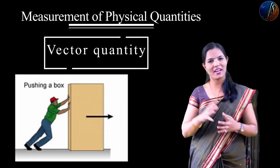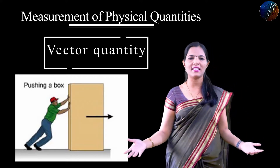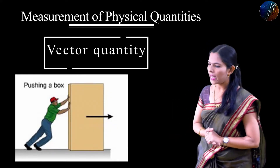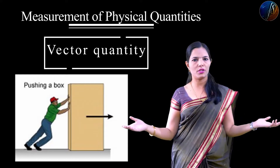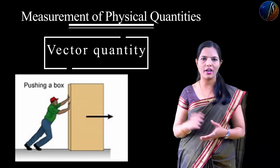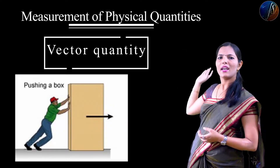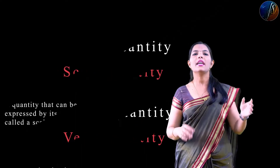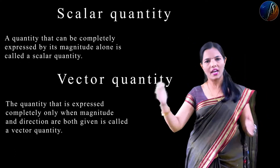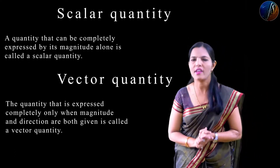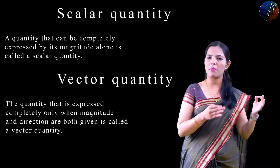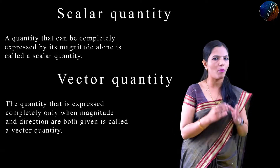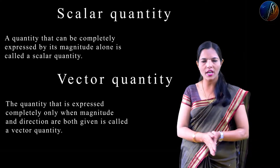So, for scalar quantity and vector quantity, this is the difference between them. In this exam you can write down the difference between scalar and vector. The scalar quantity is the quantity which can be expressed only with the help of magnitude — that is called a scalar quantity.